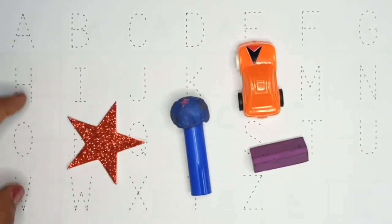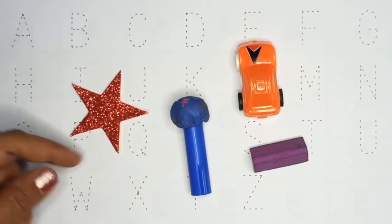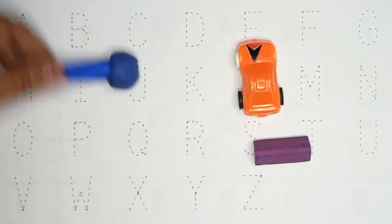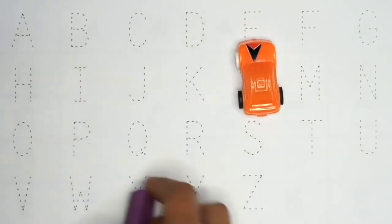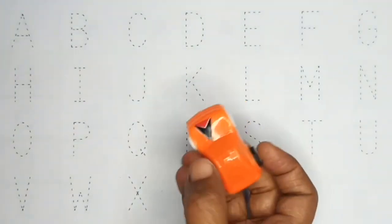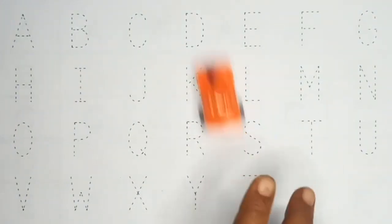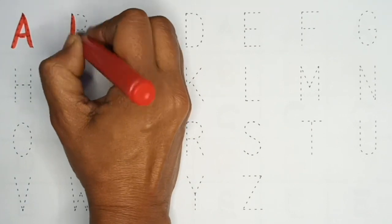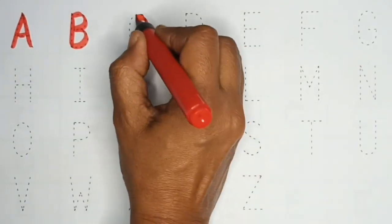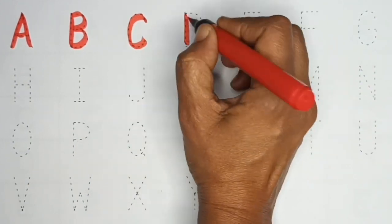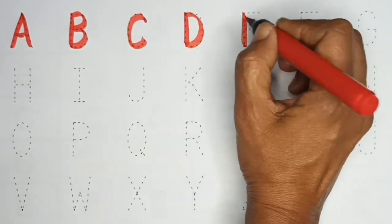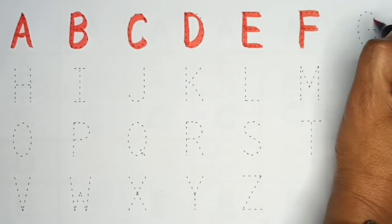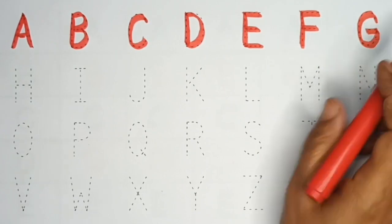Red color. Red. Blue color. Violet color. Orange color. A. A for apple. B. B for ball. C. C for cat. D. D for dog. E. E for elephant. F. F for fish. G. G for grapes. Red color.